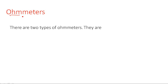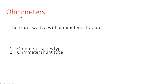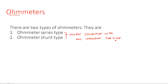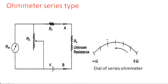There are two types of ohmmeters depending upon how the meter is connected to the unknown resistor. One is series type and another one is shunt type. The types are classified based on the meter connection with the unknown resistor. If the unknown resistor is connected in series with the meter, that is series type ohmmeter. If the unknown resistor is connected in shunt with the meter, that is shunt type ohmmeter.